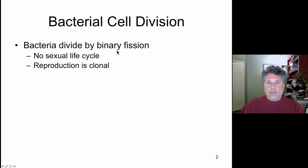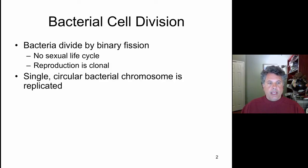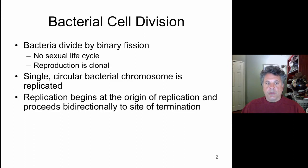Bacteria divide by a process we call binary fission because there's no sexual life cycle whatsoever. There's simple cloning of individual cells as they reproduce and divide into two. Reproduction is clonal. In the process, the genetic material must be replicated to be passed on in equal parts to both daughter cells. The bacterial chromosome is circular and is replicated during cell division.